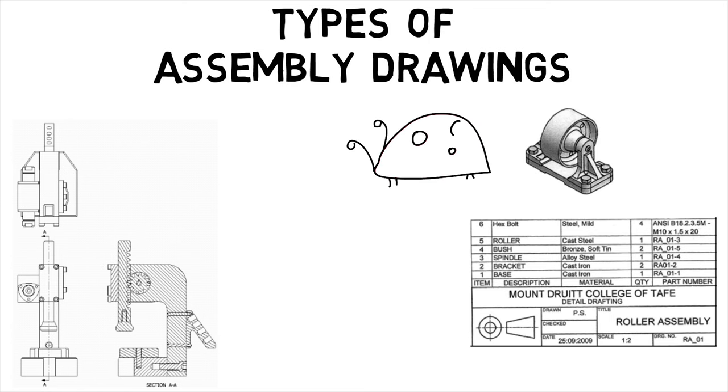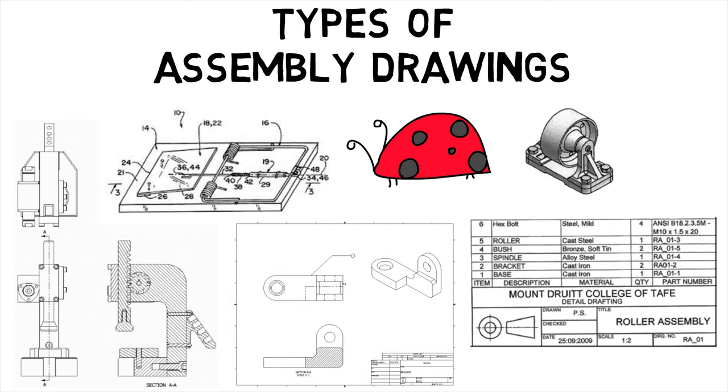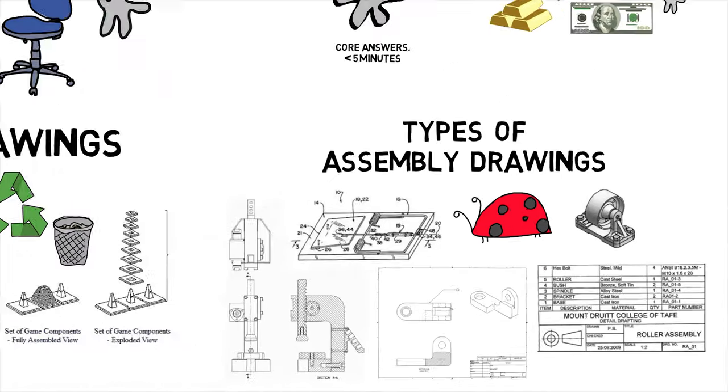Other than these, there are many special types of drawings like patent drawings which as the name suggests are used for applying and explaining patents and part drawings which are drawings of individual components that make up an assembly drawing.